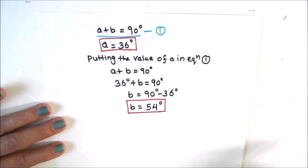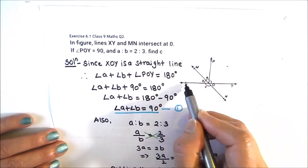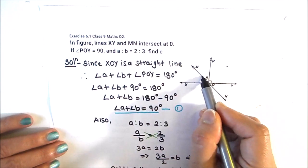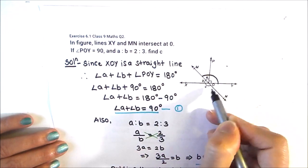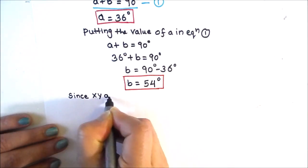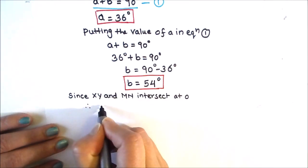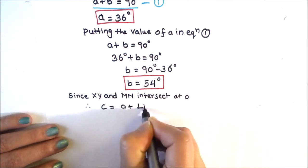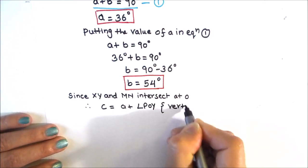Now we need to find angle C. Going back to the figure, lines XY and MN intersect at O. Angle C equals angle A plus angle POY because both these are vertically opposite angles. Since XY and MN intersect at O, C equals A plus angle POY as they are vertically opposite angles.